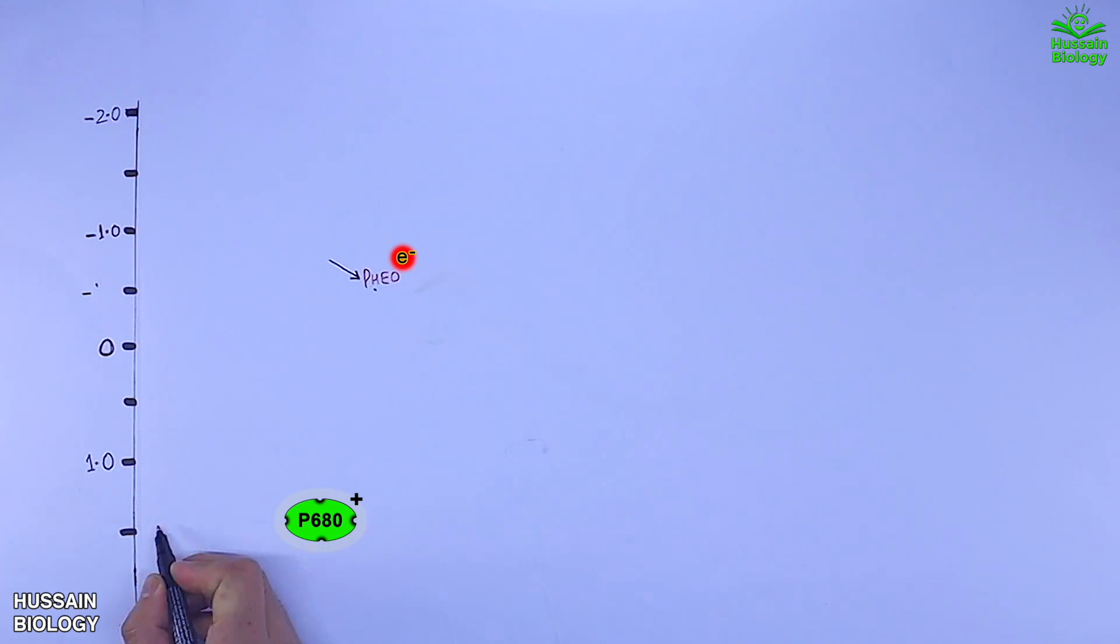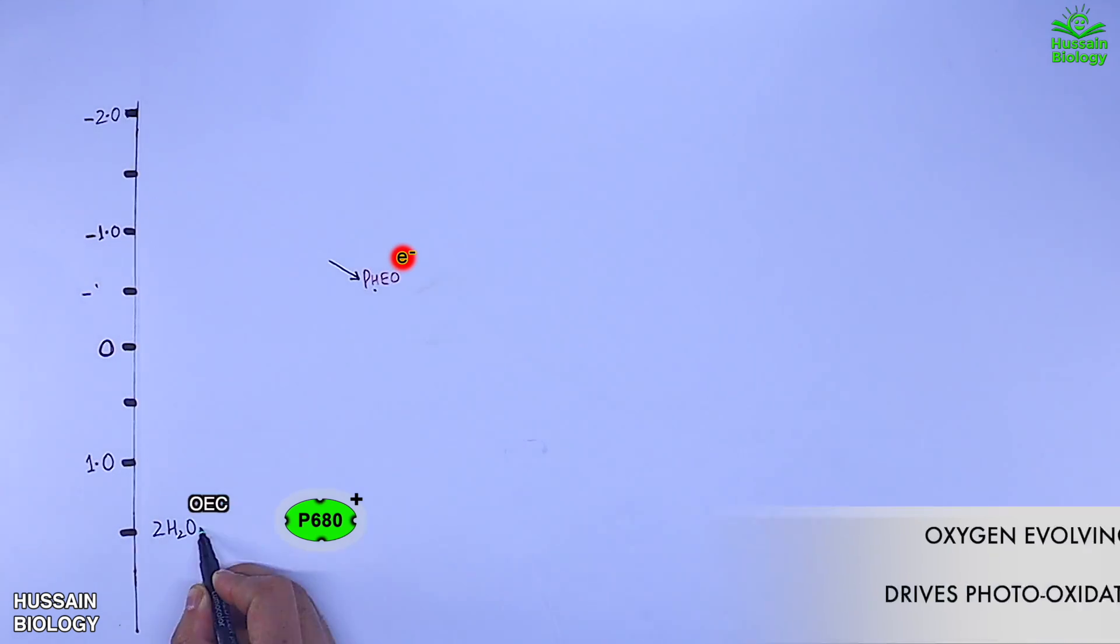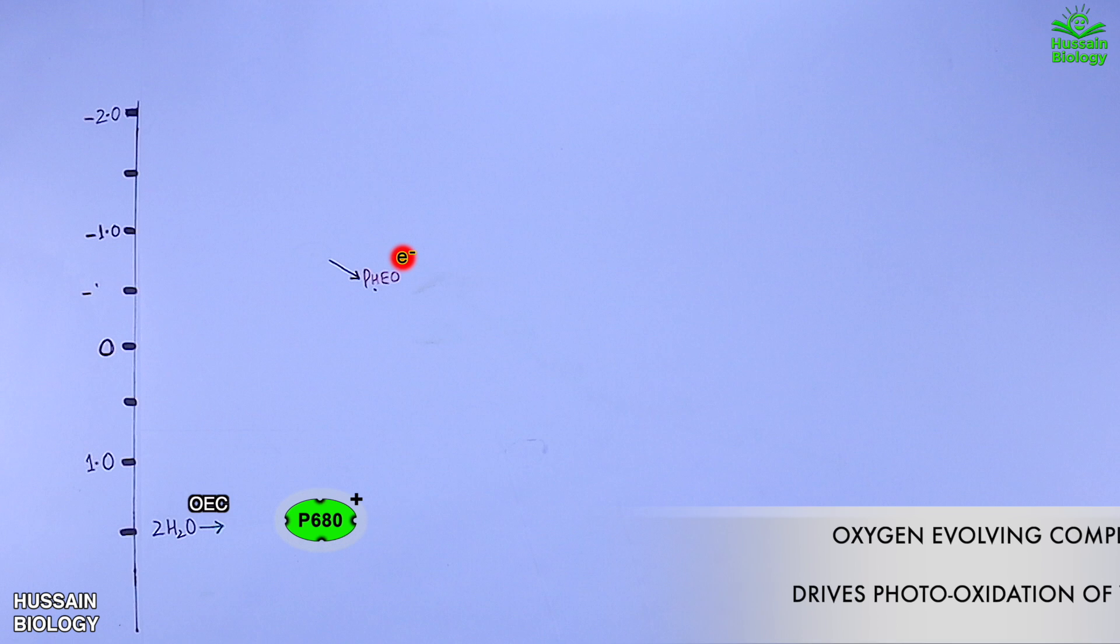So for that we have a water molecule here which is acted upon by the oxygen-evolving complex in presence of manganese molecules. The complex drives oxidation of water where we get 4 electrons, an oxygen molecule, and 4 protons. The electrons are fed to oxidized P680+ and it is reduced back to its original state, P680. Then again the same cycle continues.